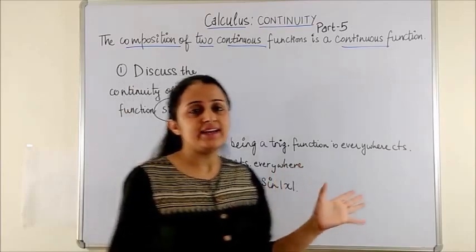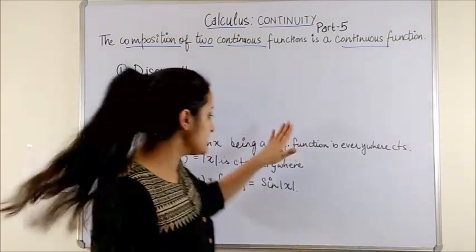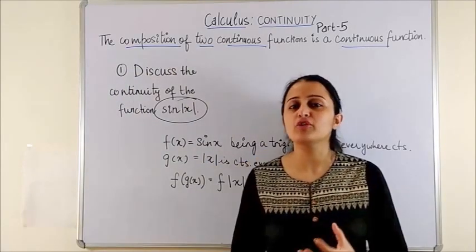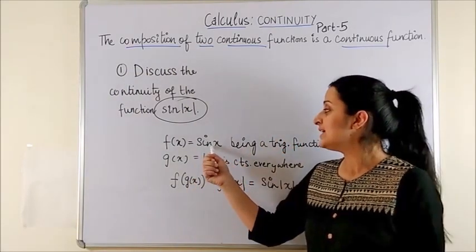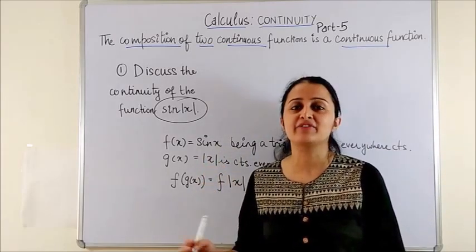Please note, in case it is a 1 or a 2 marker, this kind of a proof is sufficient. However, for a 4 or a 6 marker, you would also have to show the proof for sin x and mod x being continuous everywhere.